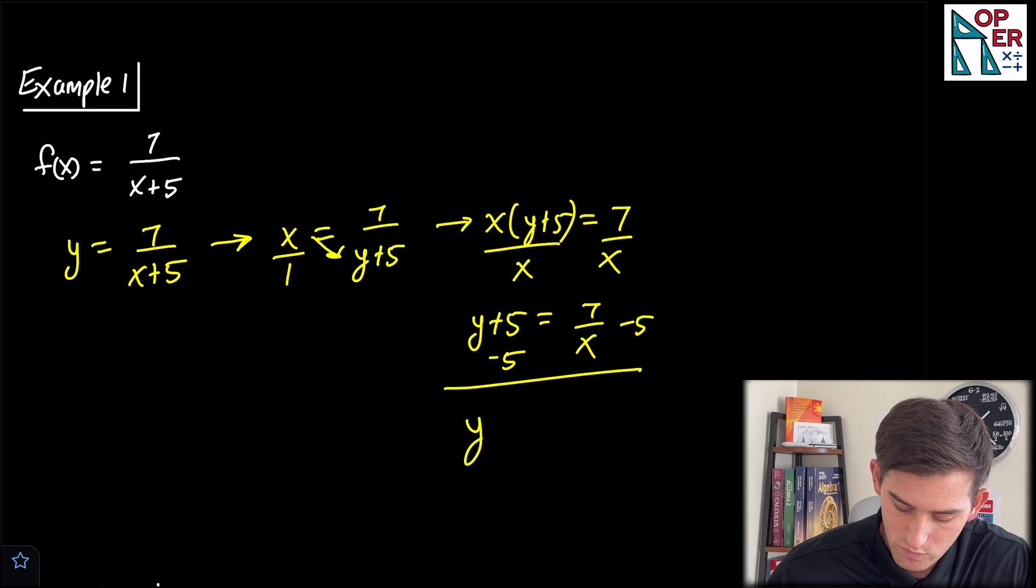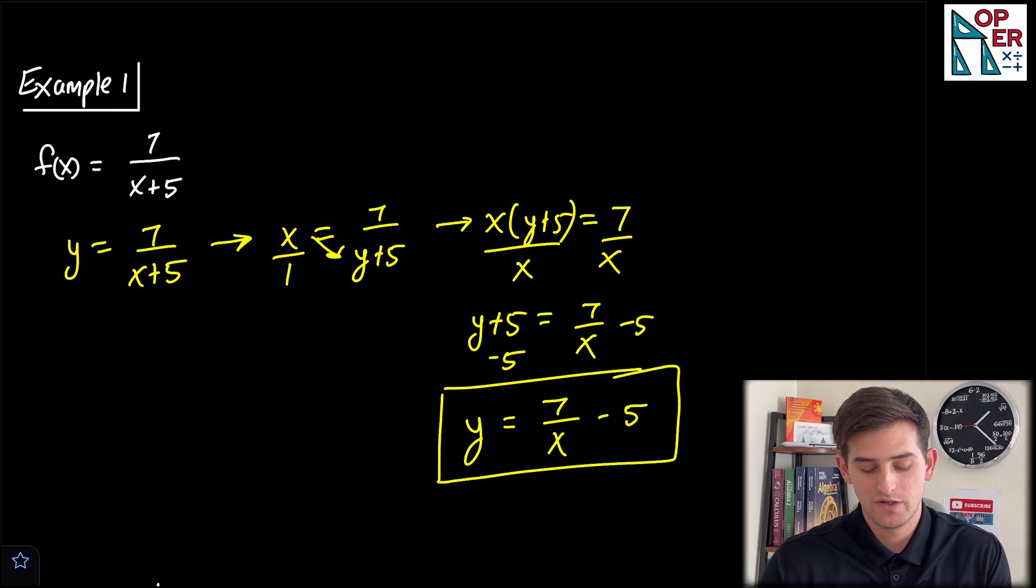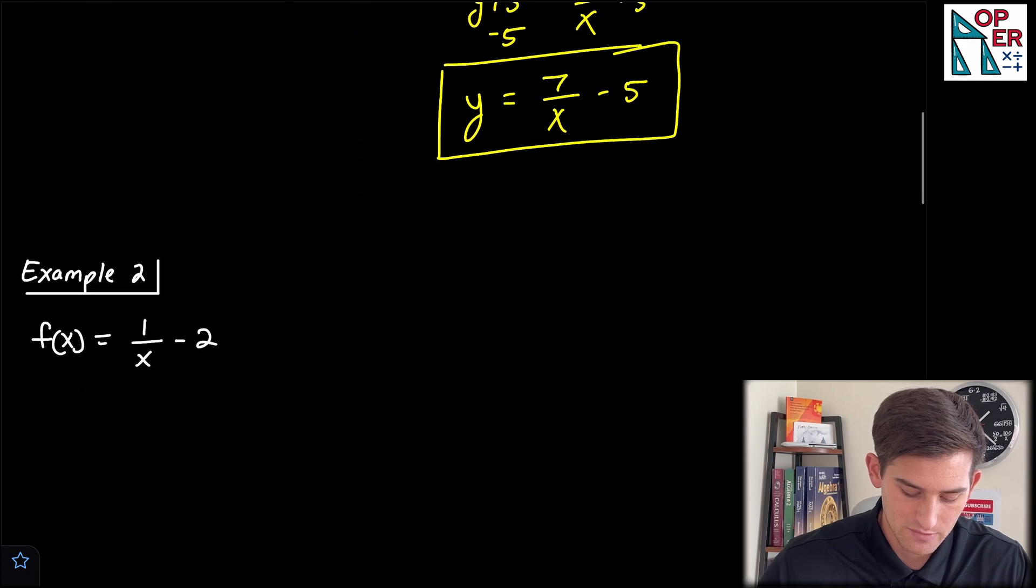So we get our inverse of y is equal to 7 over x, and minus 5 at the end. That'd be our inverse for example number one. All right, now example number two.